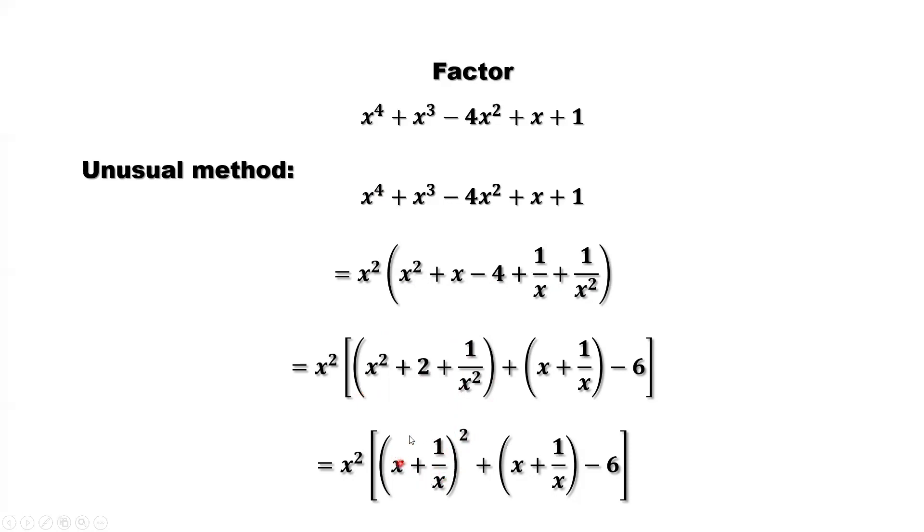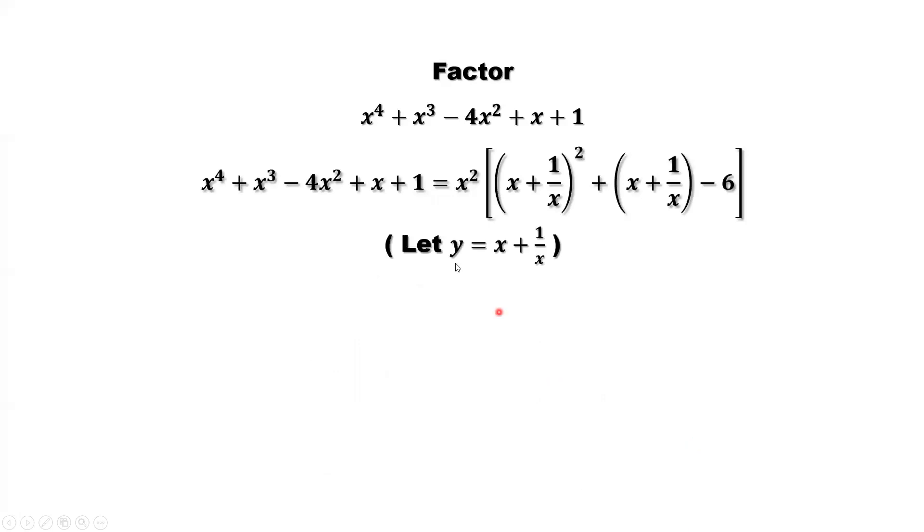So here, what can you see now? Here is x plus 1 over x, then square, plus x plus 1 over x minus 6. If you don't see this, continue. We let this x plus 1 over x as a new variable, that's y. Replace x plus 1 over x by y. Then we have here x squared. This is y squared plus y. Y squared plus y minus 6.